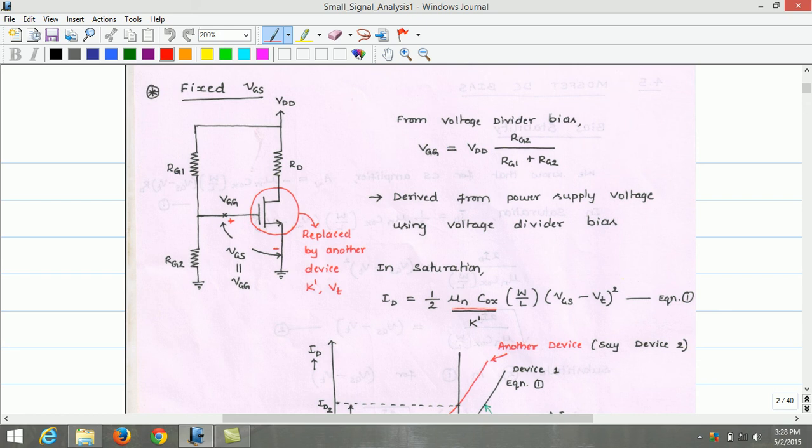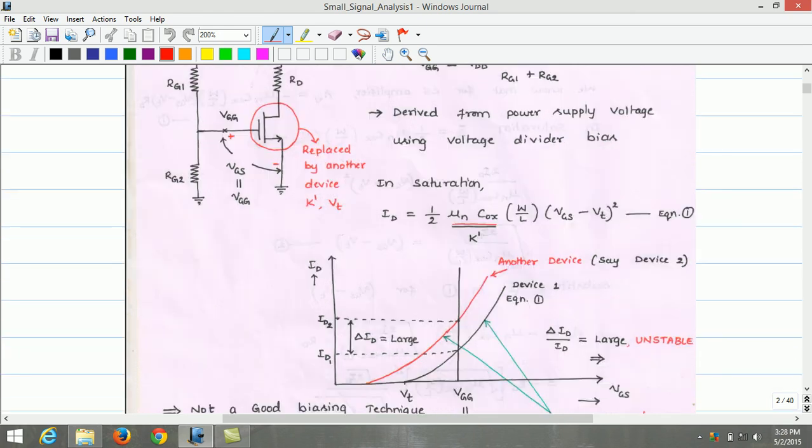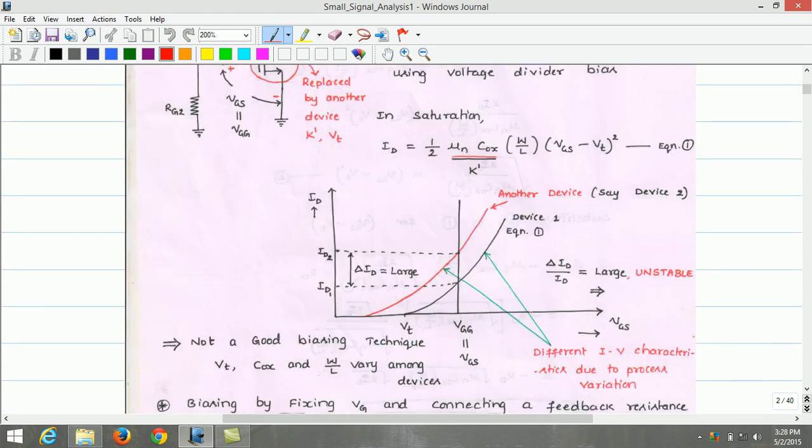So to emphasize this bias technique, let us look at more details. If we plot a graph of Id versus VGS showing the extreme values for a batch of MOSFETs of the same type, we can see that device 1 is the first device which exhibits this characteristic. Another device, let us say device 2, exhibits another characteristic.